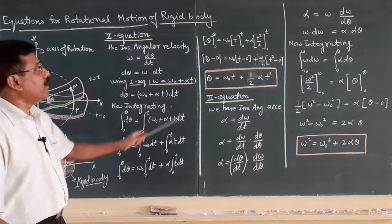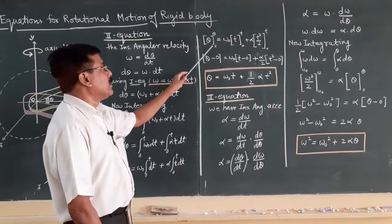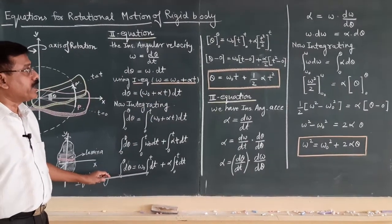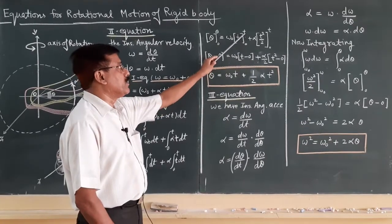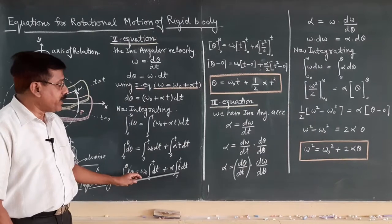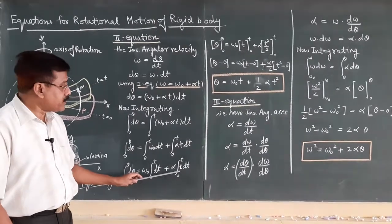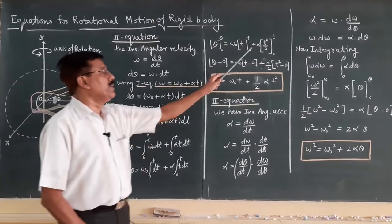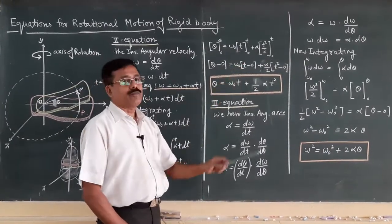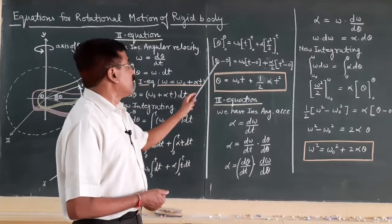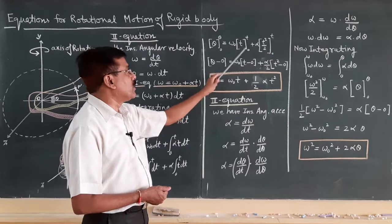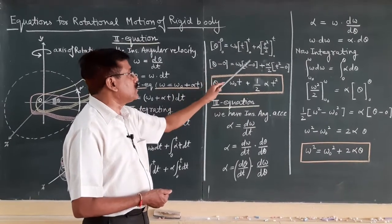Integrating d-theta gives theta with limits 0 to t. Integrating dt gives t evaluated from 0 to t. Similarly, integrating t dt gives t-squared over 2, evaluated from 0 to t. Applying the limits on the left side: theta minus 0 equals omega-zero times (t minus 0) on the upper limit minus lower limit.